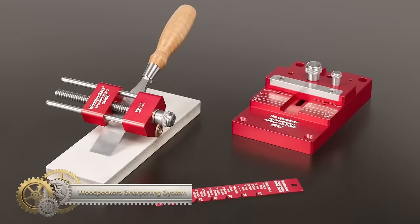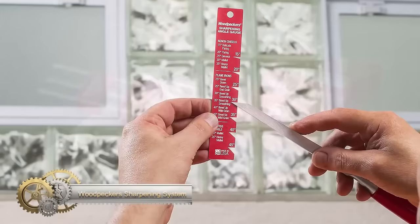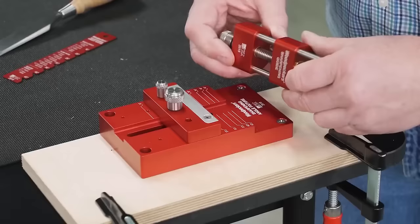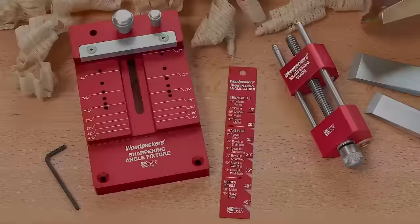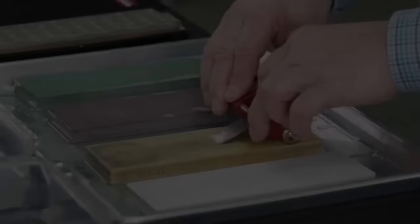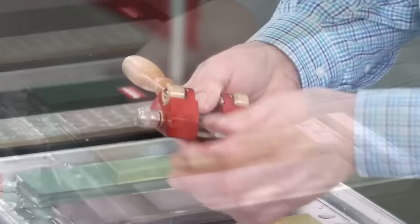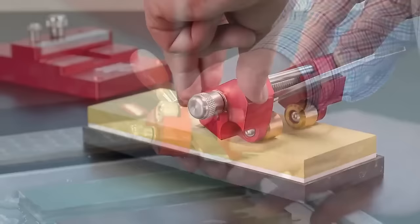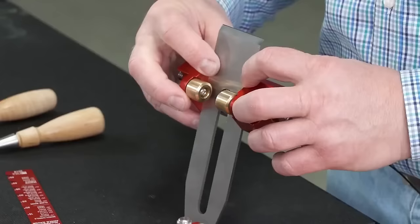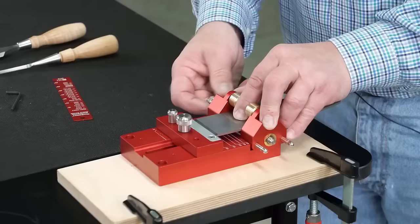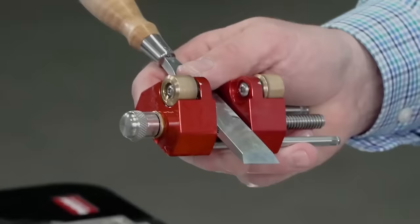Woodpecker Sharpening System is a revolutionary tool that redefines the sharpening process, offering unparalleled ease, accuracy and efficiency compared to traditional freehand sharpening methods. Achieving the sublime satisfaction of using razor sharp tools, whether for intricate end grain paring cuts or achieving whisper thin shavings with a smoothing plane, is now effortlessly within reach. This system's exceptional features set it apart from the competition, making it the top choice for woodworkers looking to save time and effort while ensuring their tools are always at their sharpest. If you crave sharper tools in less time, the Woodpecker Sharpening System is your gateway to woodworking bliss.